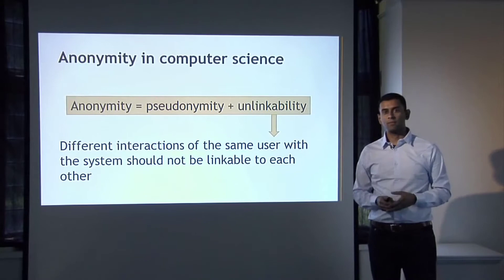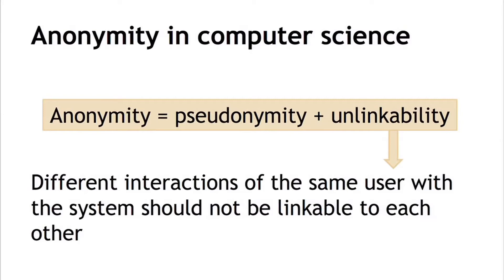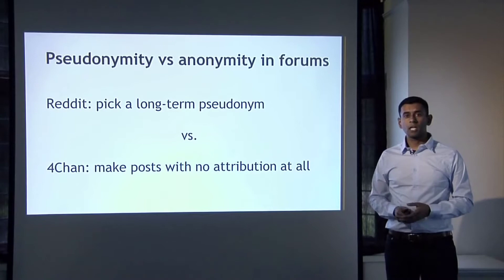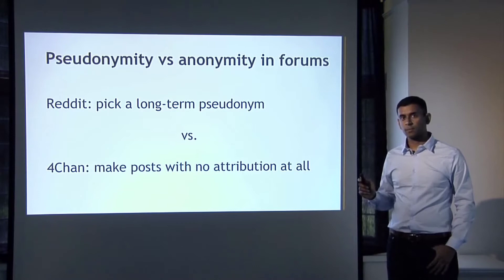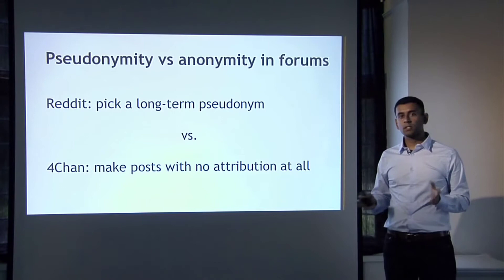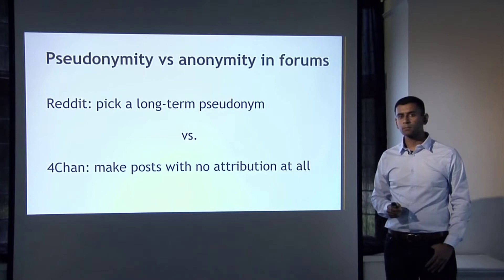This distinction between full anonymity and mere pseudonymity comes up in a variety of other contexts. Online forums are a good example. Reddit is a forum where you pick a long-term pseudonym and interact over a period of time — that's pseudonymous interaction. The opposite, fully anonymous interaction where you can make posts with no attribution at all, is the model in 4chan. Bitcoin is in the pseudonymous model more than the anonymous model.